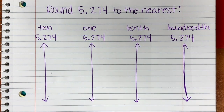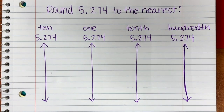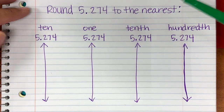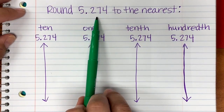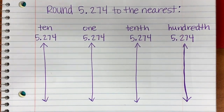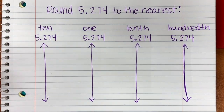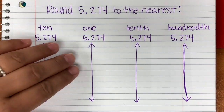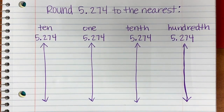Hi everyone, I'm making a quick video on lesson 7 for module 1 for anybody who could use a little extra support. We are looking at rounding using vertical number lines. Here I'm going to round the number 5.274, or 5 and 274 thousandths, to the nearest place — and we're going to do it four different ways: to the nearest ten, one, tenth, and hundredth.